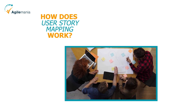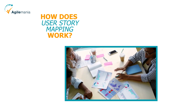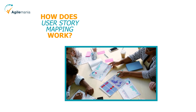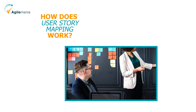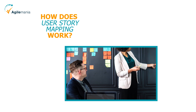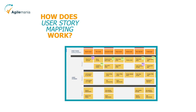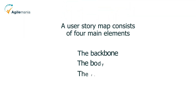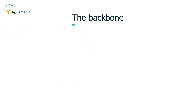But how does user story mapping work? User story mapping is based on the idea that user stories are not just a list of requirements, but a narrative of how users interact with your product to achieve their goals and solve their problems. User story mapping helps you tell that story in a simple and visual way using a map-like structure.